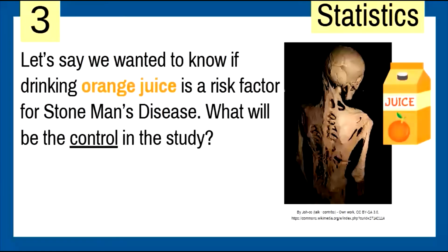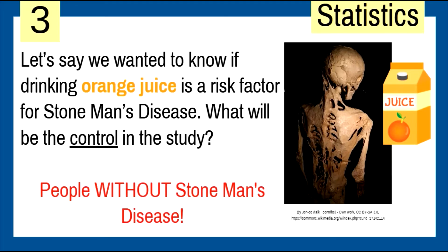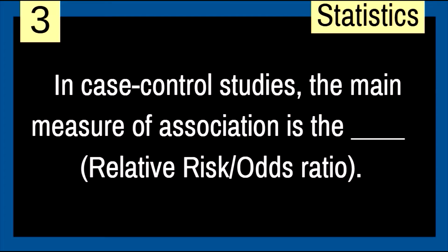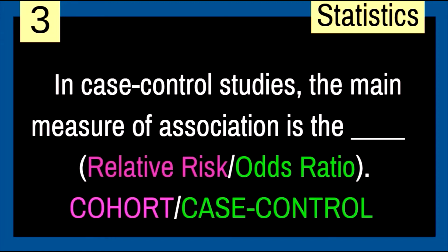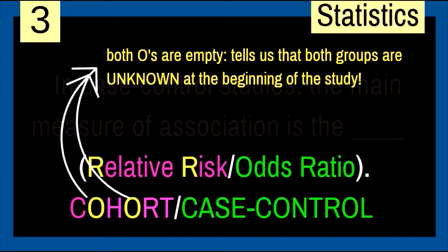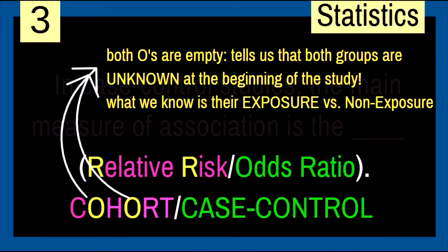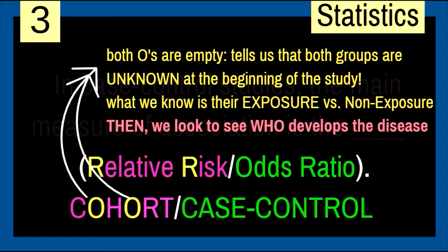Let's say we wanted to know if drinking orange juice is a risk factor for Stone Man's Disease. Cases are people who have the disease; controls are those without Stone Man's Disease. In a case-control study, we'd look back in history to see if orange juice had an effect on development of the syndrome — and we probably wouldn't find an association.